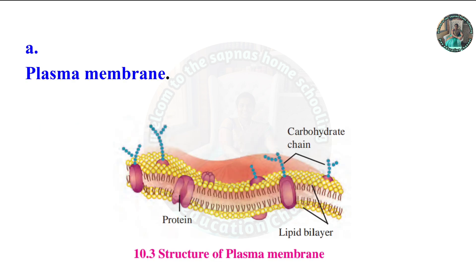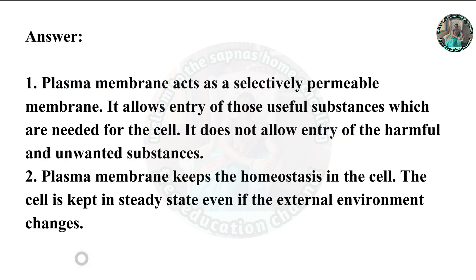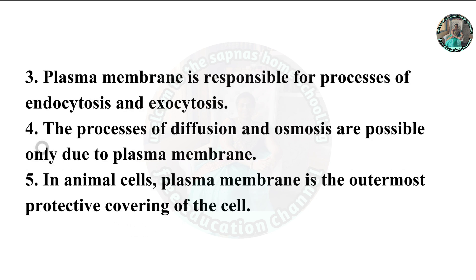Question 4: Give the functions. Part A: Plasma membrane. Look at the structure carefully — carbohydrate chain, protein, and lipid bilayer. Answer: Plasma membrane acts as a selectively permeable membrane; it allows entry of those useful substances needed by the cell and does not allow entry of harmful or unwanted substances. It keeps homeostasis in the cell, maintaining a steady state even if the external environment changes. It is also responsible for the processes of endocytosis and exocytosis. The processes of diffusion and osmosis are possible only due to the plasma membrane. In animal cells, the plasma membrane is the outermost protective covering of the cell.